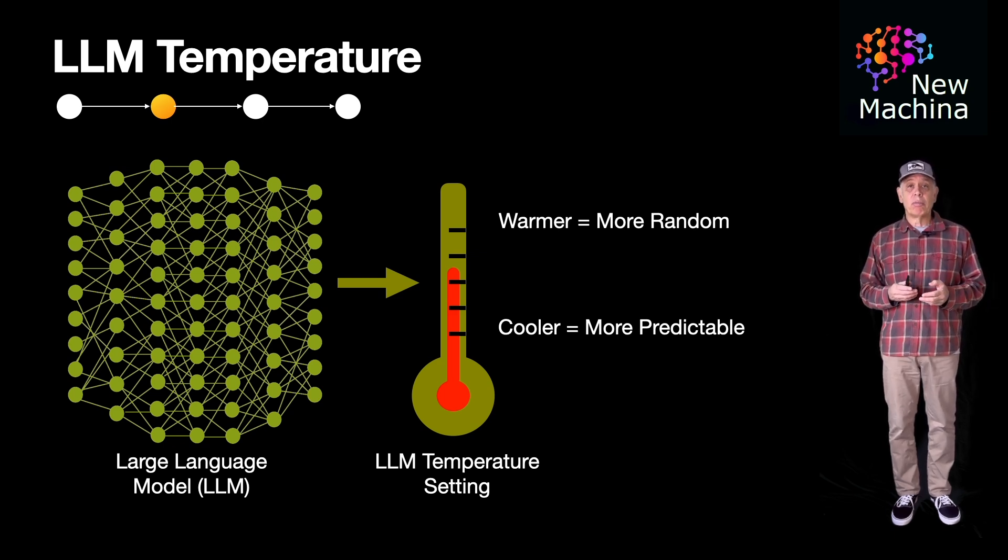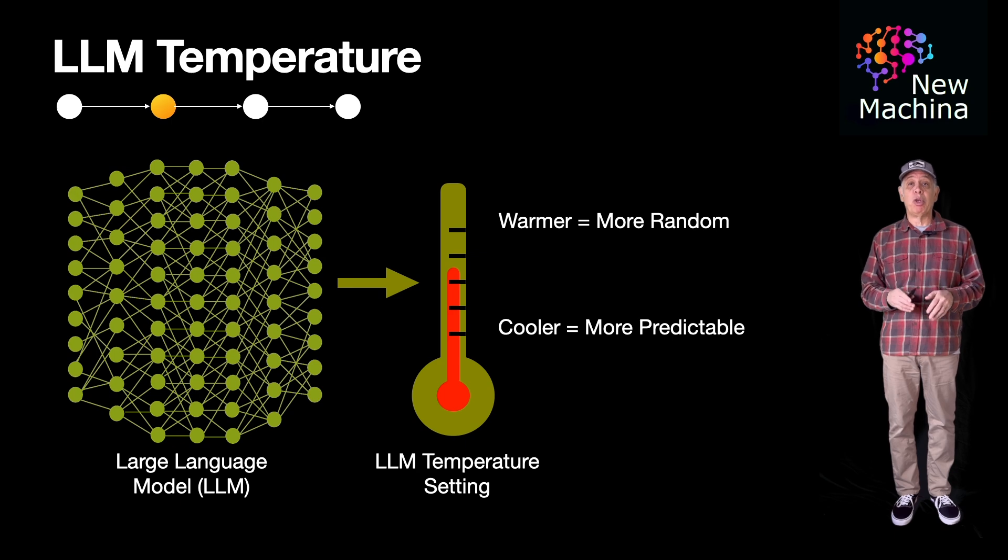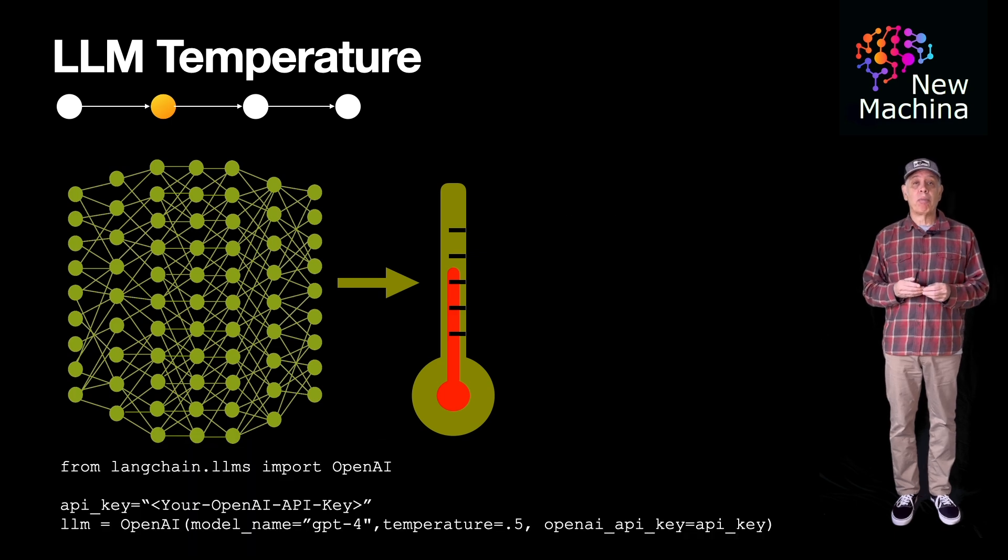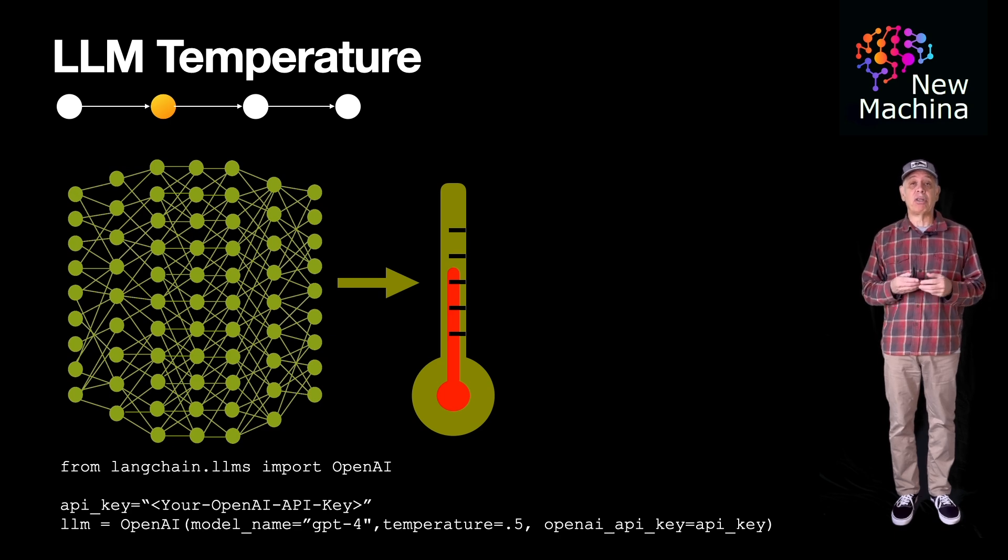System builders and users can set the temperature parameter when generating responses to balance between creativity versus consistency. Here's a simple code block example. I use Python and the Langchain framework to show you programmatically how to set an LLM's temperature.